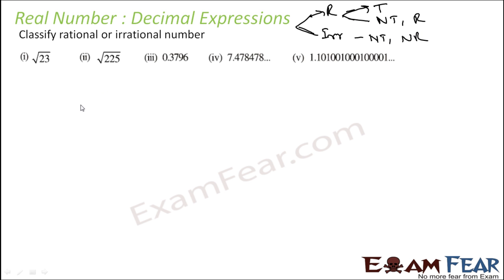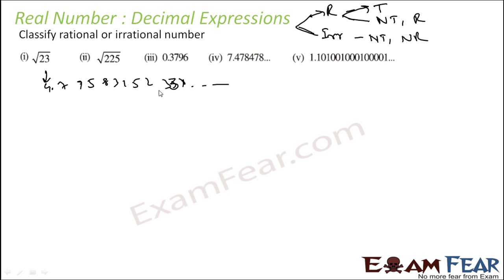Root 23: if we actually find the value of root 23, it is 4.758315233... It is non-terminating and non-repeating — the list goes on.